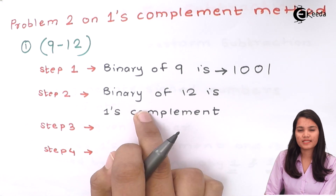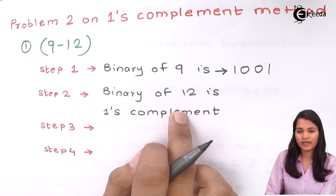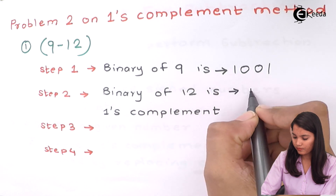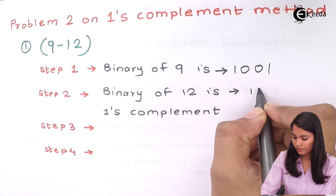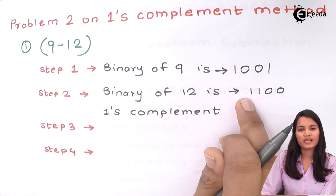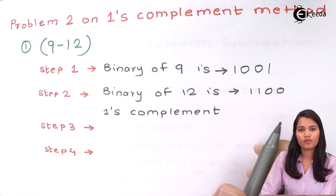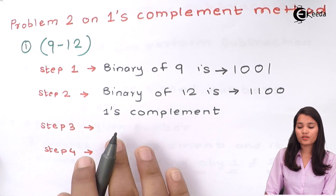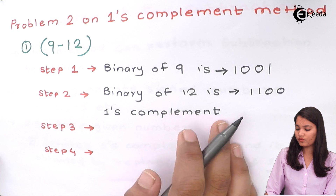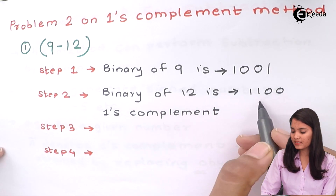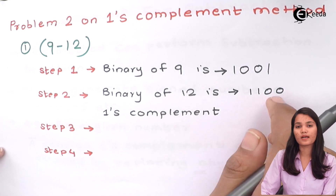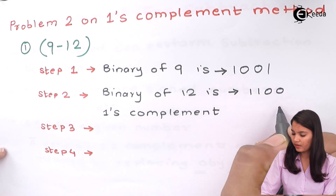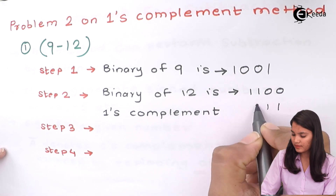The second step is to find out the binary of 12. The binary of 12 is 1 1 0 0. Now we have to find out the one's complement. One's complement means you have to replace the value of each digit by its opposite value. So the one's complement of 12 will be 0 0 1 1.